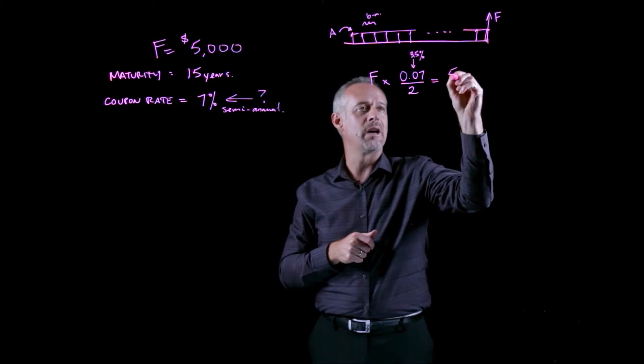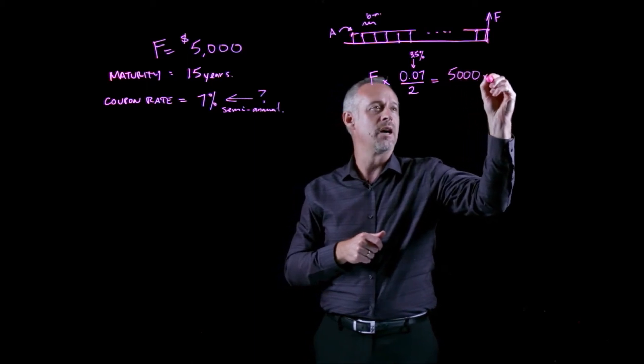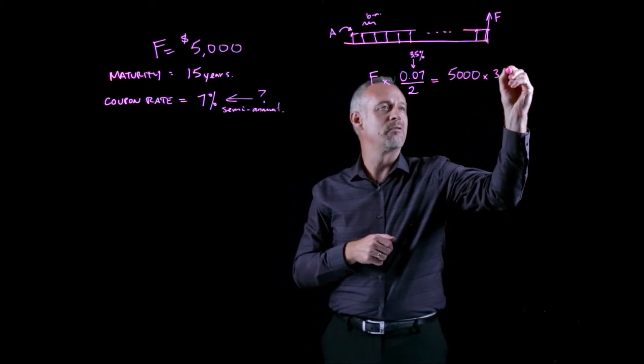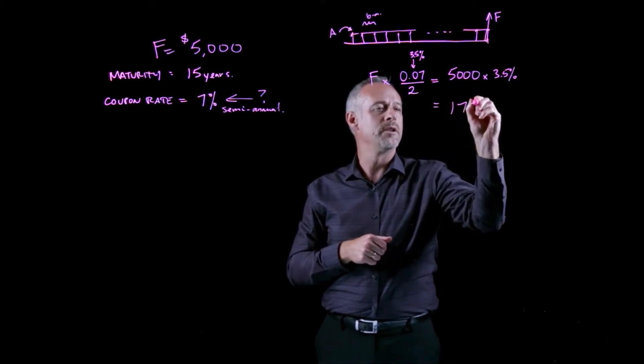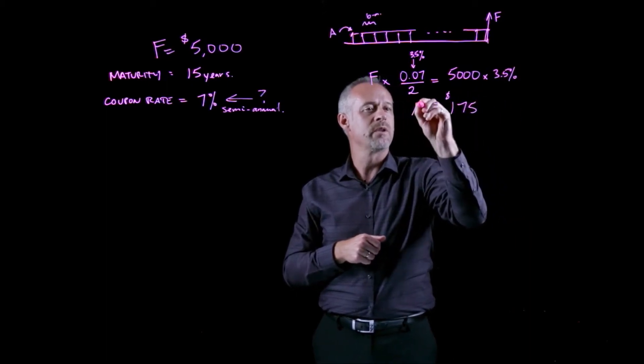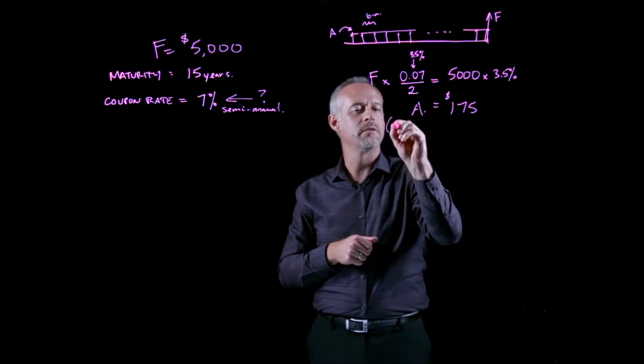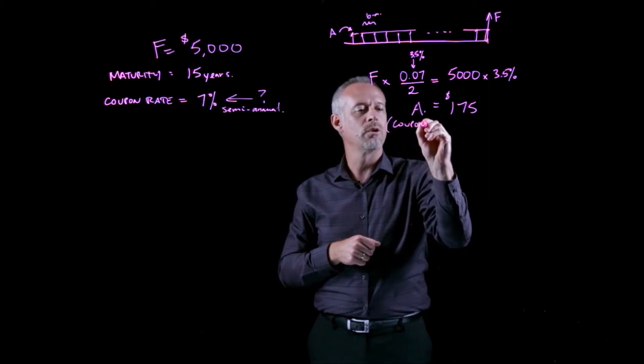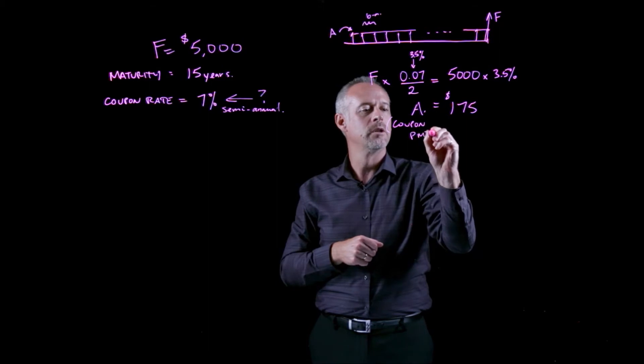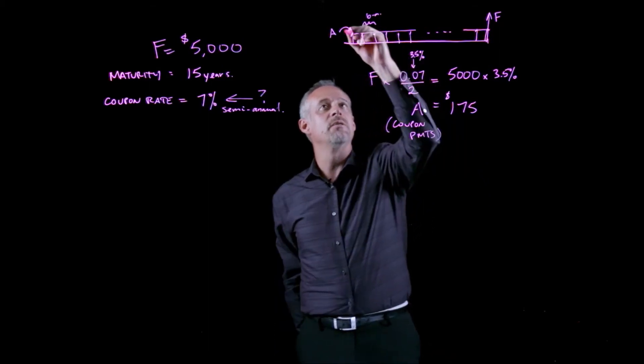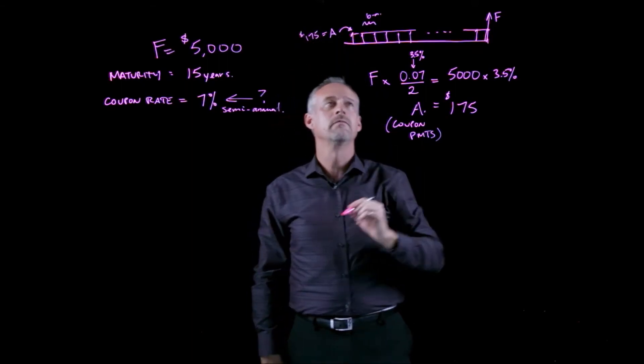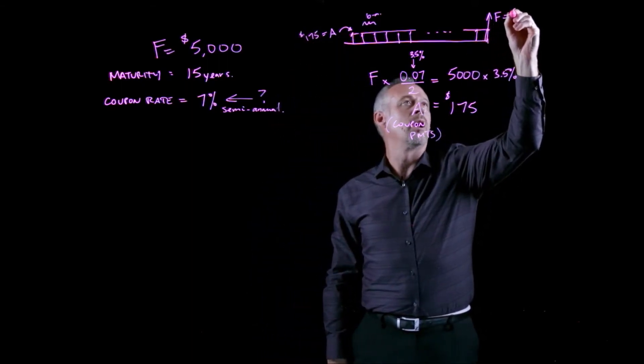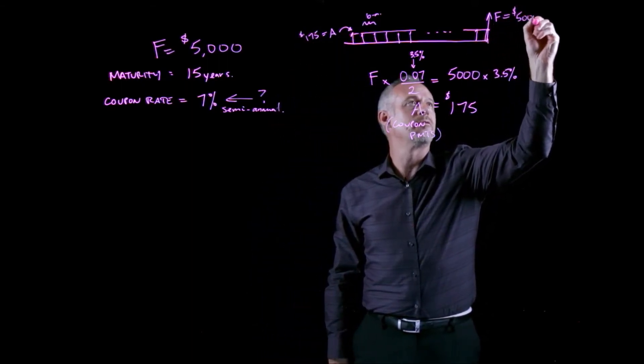So effectively, this is 3.5% of our face value. For this problem, that would be $5,000 times 3.5% or $175. The value of our annuity, or coupon payments, is $175. And the value of our face value is $5,000.